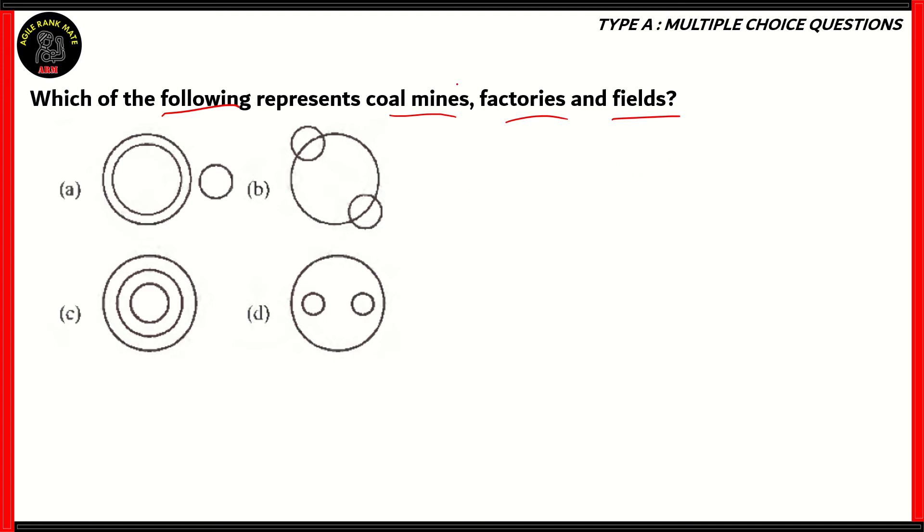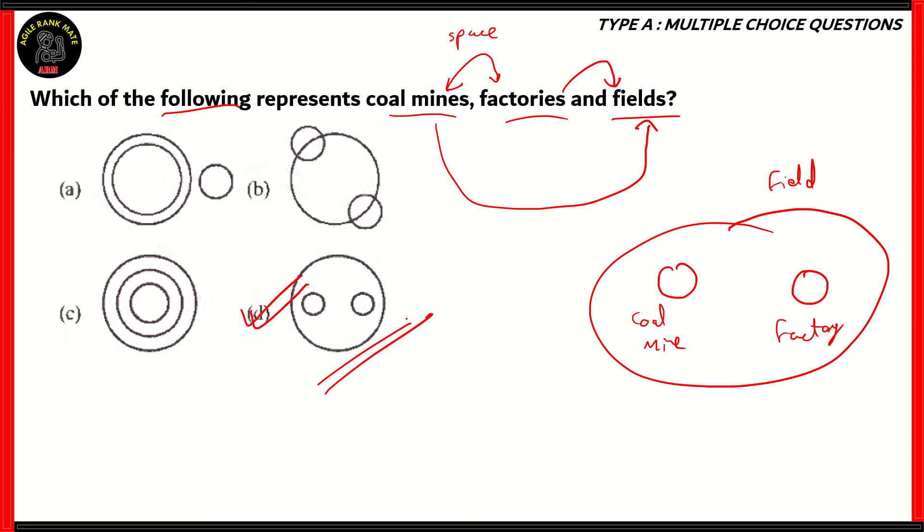Now if you look at the three words, coal mines and factories are not related to each other in terms of space or area. It's not that coal mines are present inside factories or factories are present inside coal mines. They're two separate entities. However, coal mines are mostly present in fields. Factories are also mostly present in fields. So if you have a large enough field, you can include a coal mine and a factory on it.